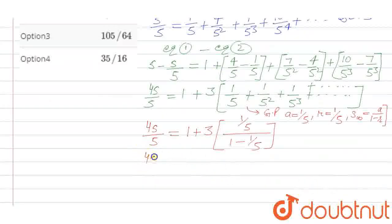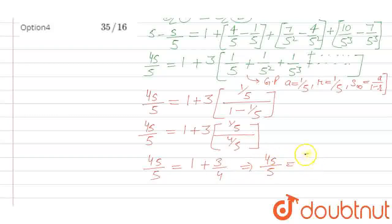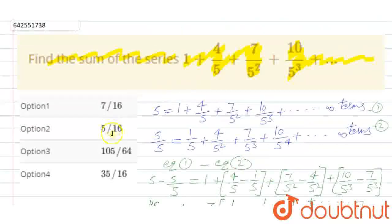This simplifies as: 4S/5 = 1 + 3 times (1/5 divided by 4/5). The 5s cancel out, giving 4S/5 = 1 + 3/4. So 4S/5 = 7/4 (since 4 + 3 = 7). Therefore, the value of S = (5 × 7)/(4 × 4) = 35/16. This is the final value of the sum of the series, 35/16, and the correct option is option 4. Thank you.